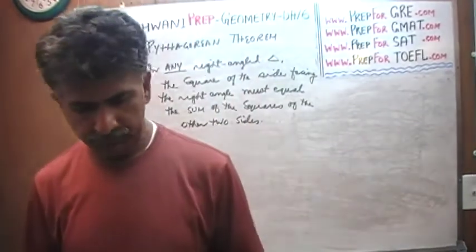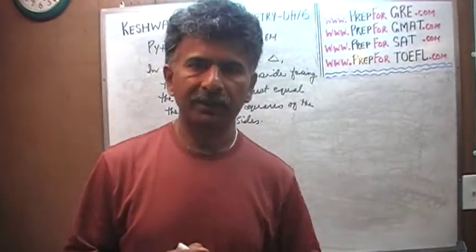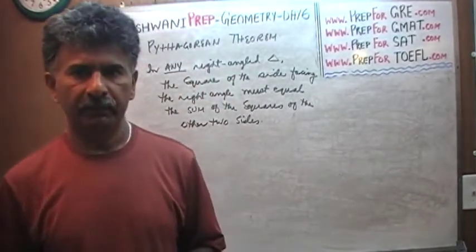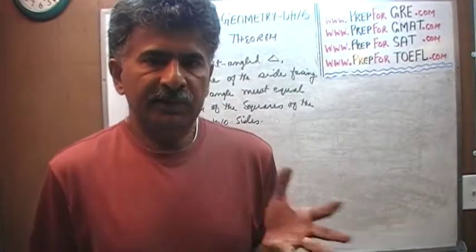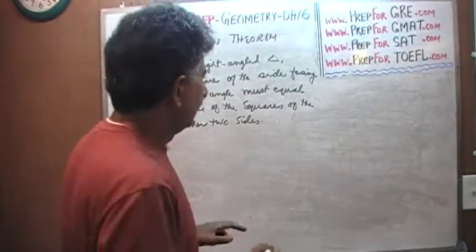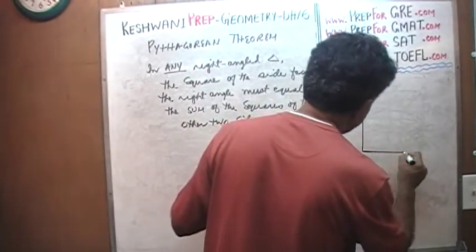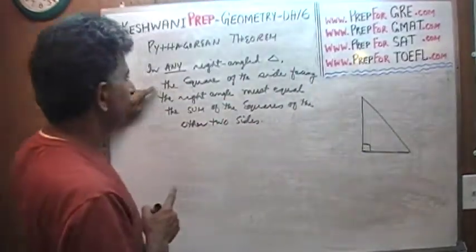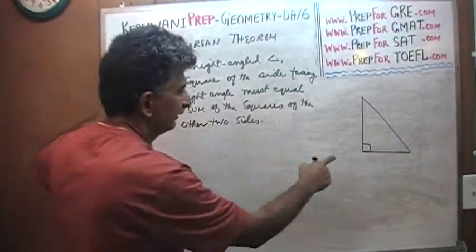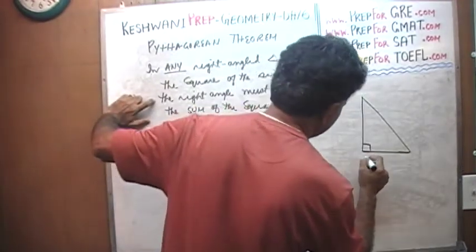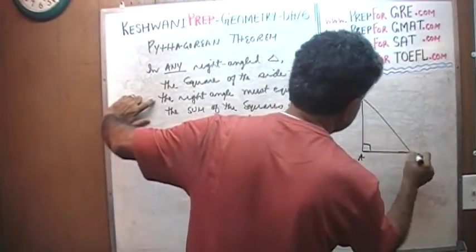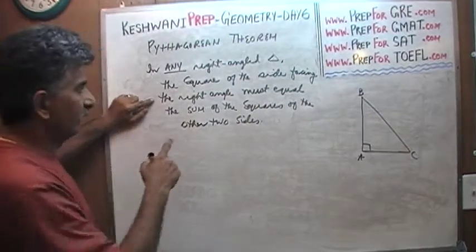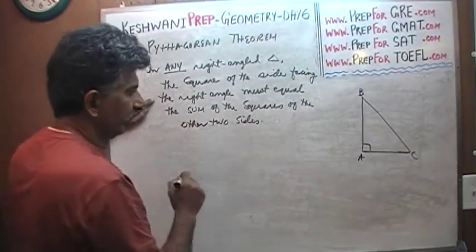This guy Pythagoras did not wake up one day announcing to the whole village: 'Hey guys, C squared equals A squared plus B squared.' People would turn to him and say, 'What does it mean?' You must articulate the concept. What he said is that if you have a right angle triangle, then the side facing the right angle — let's call the sides A, B, and C — the square of the side facing the right angle would equal the sum of the squares of the other two sides.